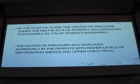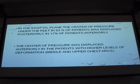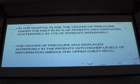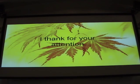The center of pressure was displaced anteriorly in patients with high levels of deformation at the thoracolumbar level. There is reason to continue this study with larger randomization, which would allow us to divide patients based on age and sex into several age groups, and more clearly determine at which deformation value and level the body can compensate without creating additional arcs of deformation.